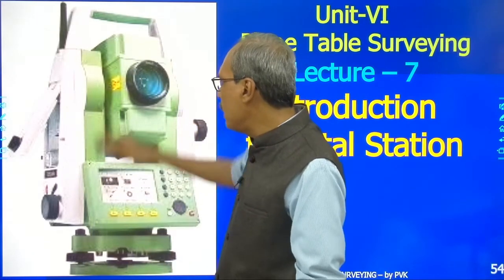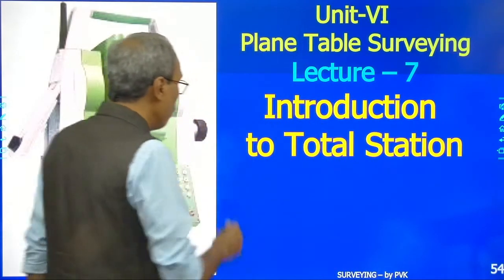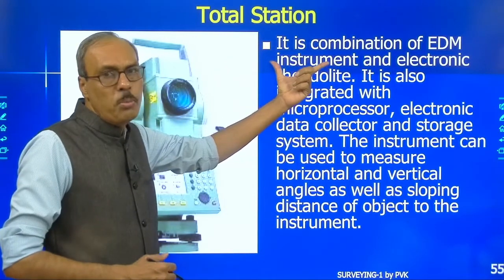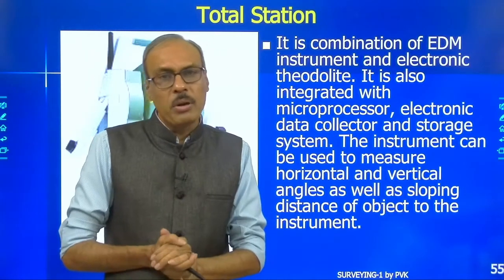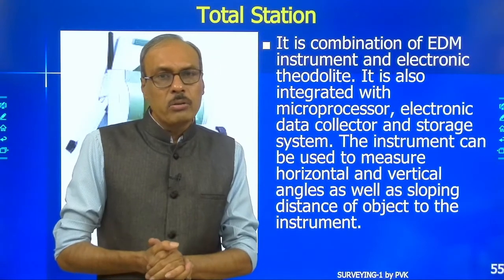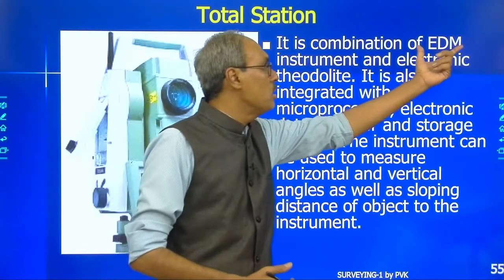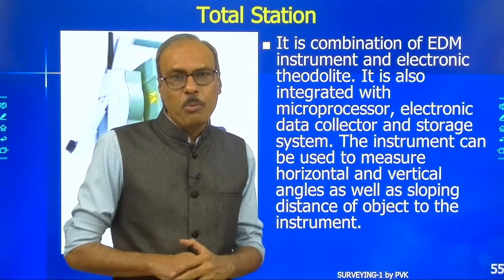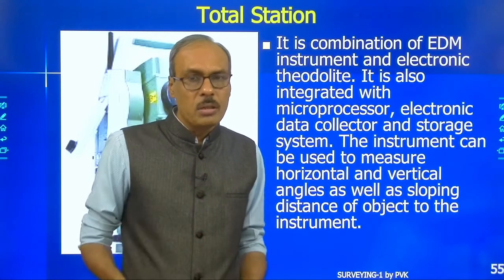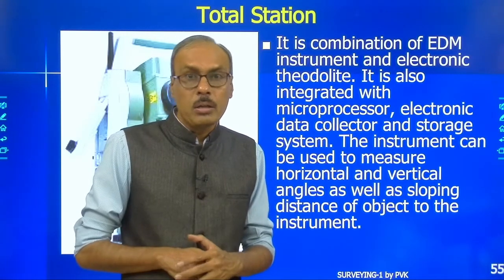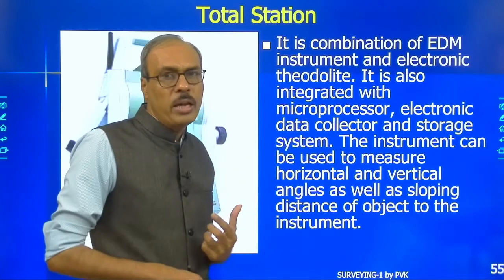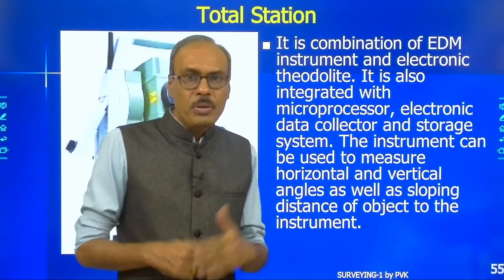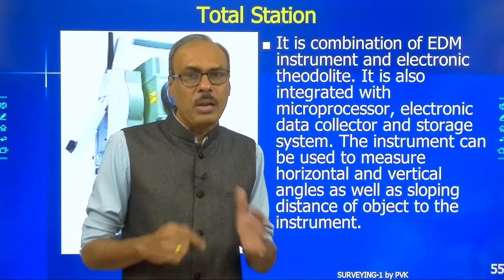The total station is similar in arrangement to our theodolite. It is the combination of an electronic distance measurement instrument and an electronic theodolite. It is also integrated with a microprocessor, which can perform all required arithmetic and numerical calculations. There is also an electronic data collector — similar to a memory chip in a computer or smartphone — which automatically saves the data from every operation.